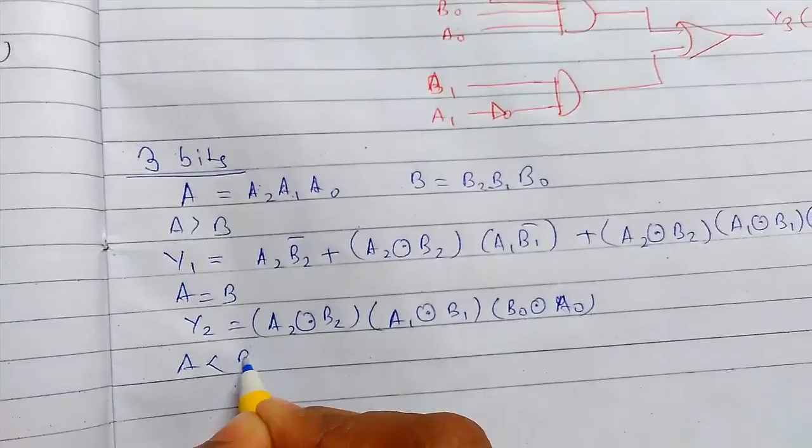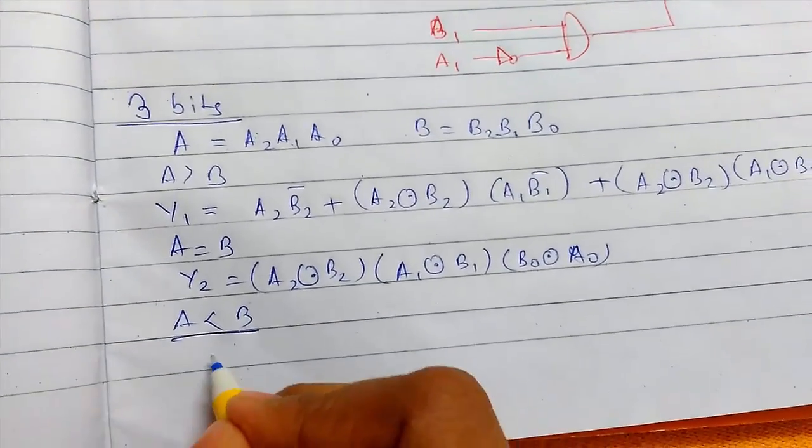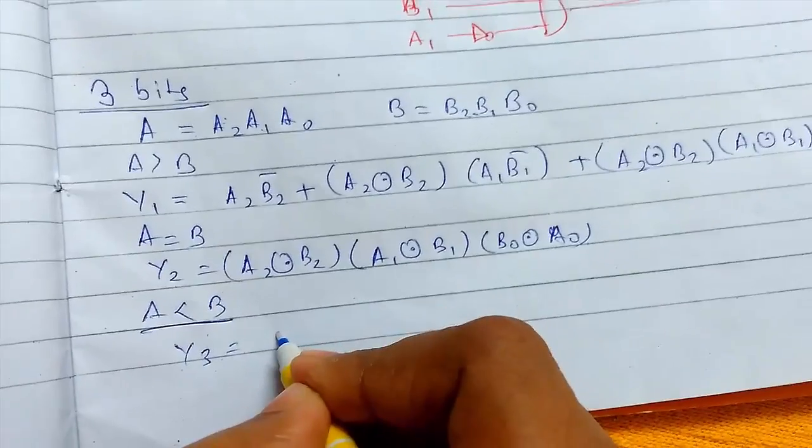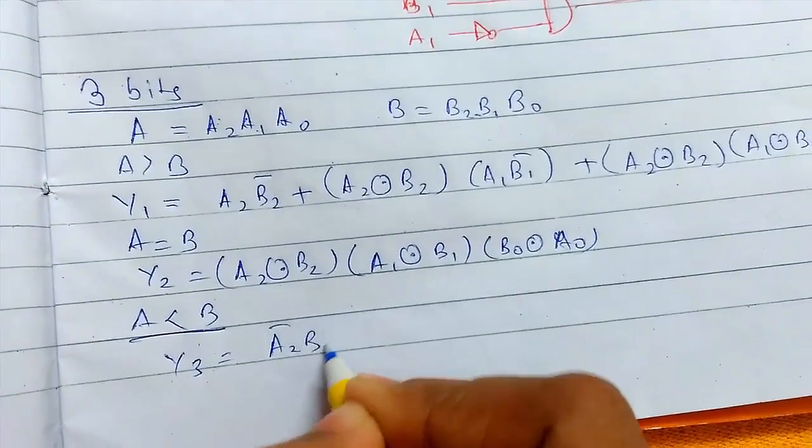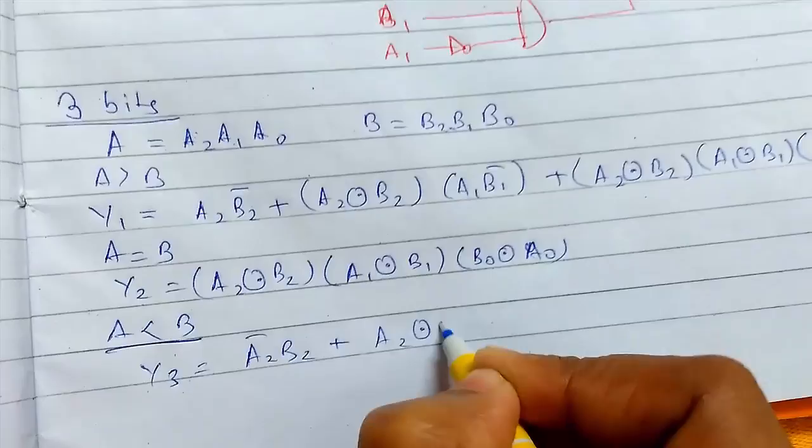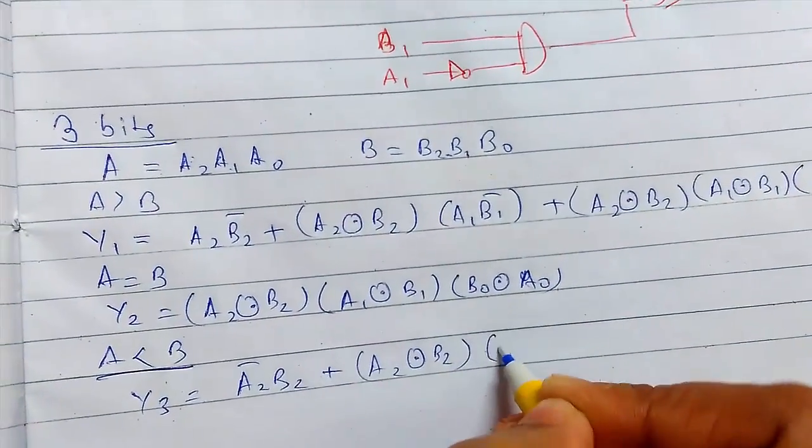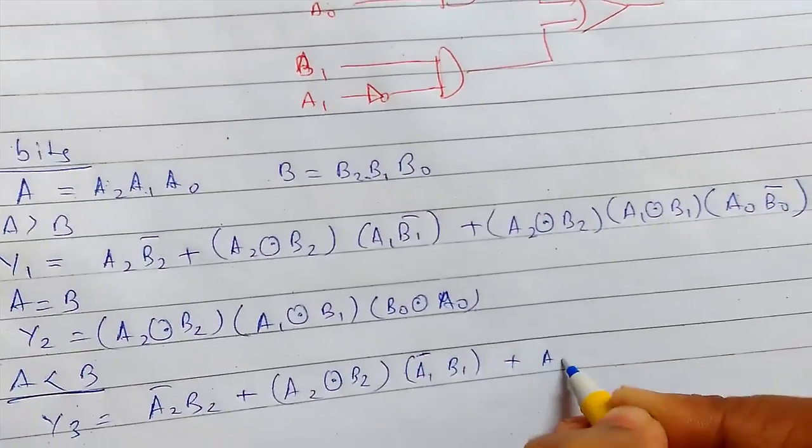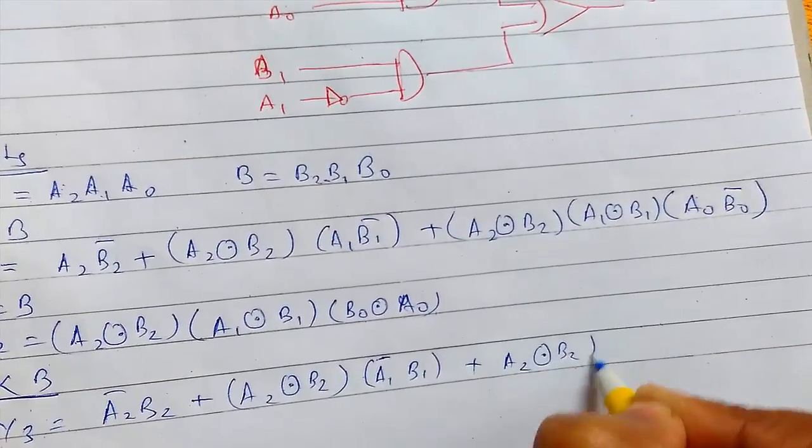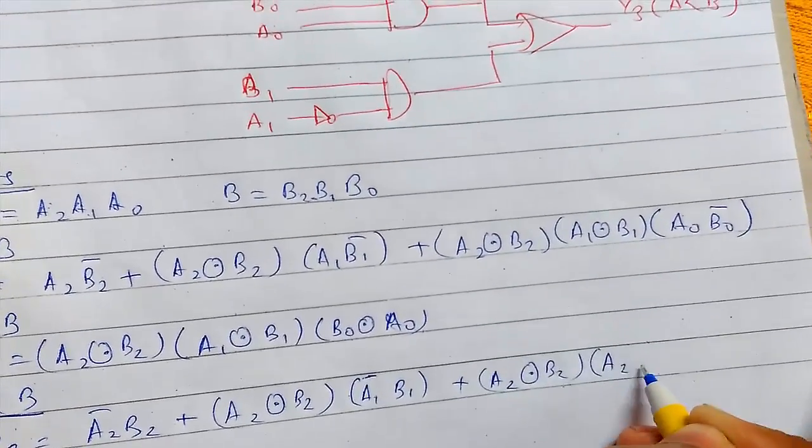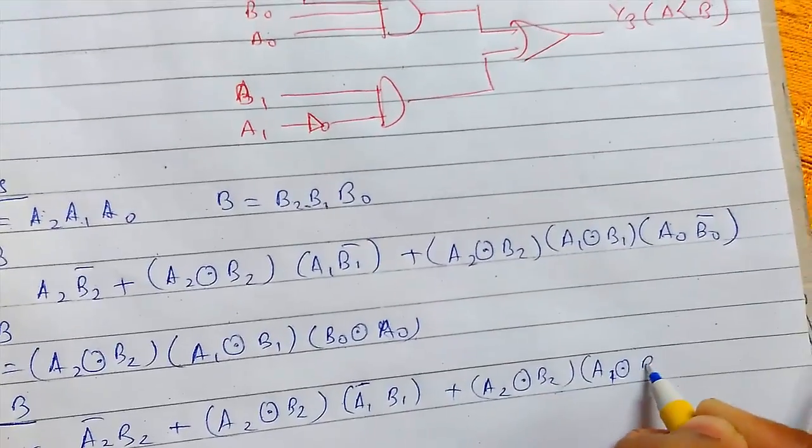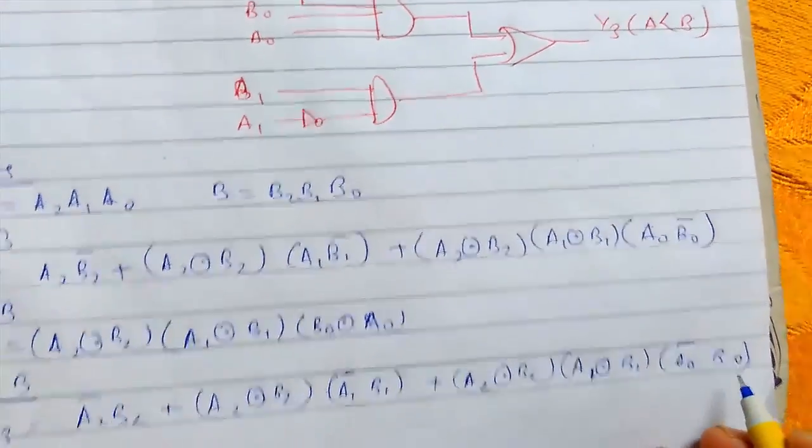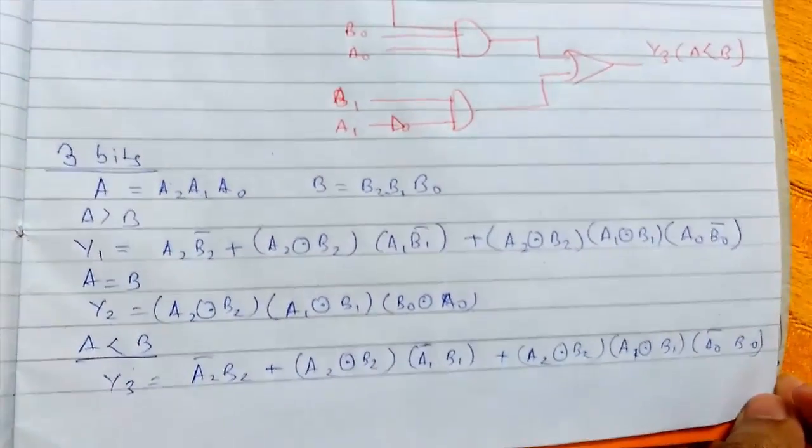And for the final case, this must be less, just opposite of this. This was for comparator. This was everything about.